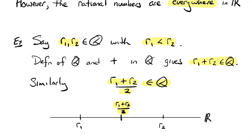Said another way: between any two rational numbers I can find a rational number. And since that midpoint is itself rational, between it and R1 I can also find a rational number, and between those two another, and so on. So — not yet mathematically precise — the rational numbers occur everywhere on the real number line.